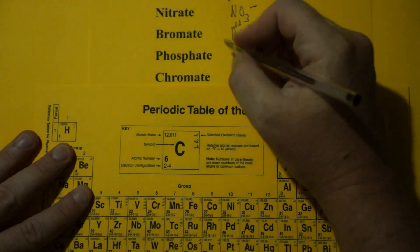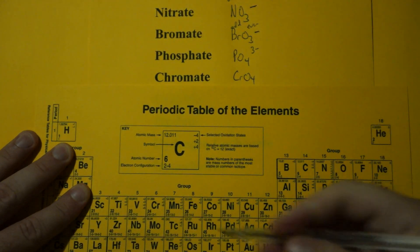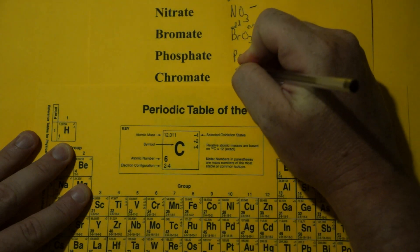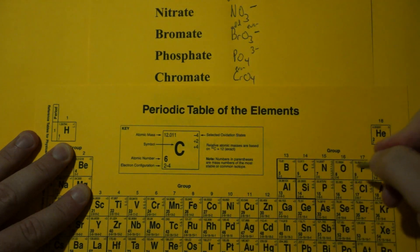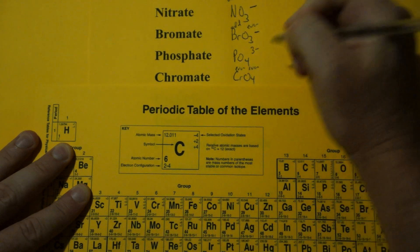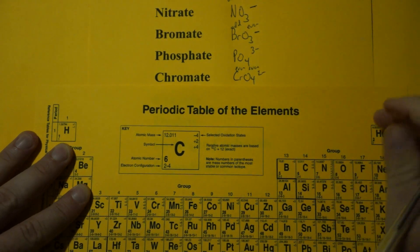Chromate. Chromate is CrO4. Chromium is in group 6. That's even. Oxygen is in group 16. That's also even. Two evens make it even. That charge is 2 minus.